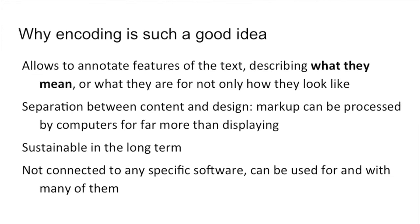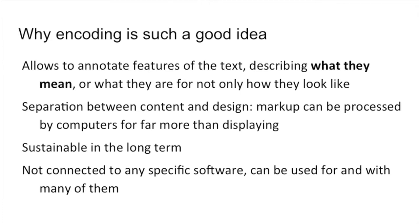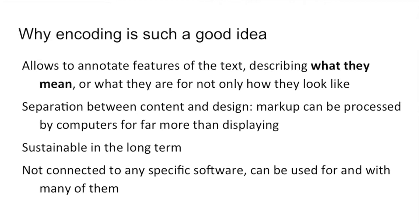Because encoding allows you to describe the text for what it is and not for what it looks like, which is a smart thing to do if you want to process features on the text and not the way they look. It also allows you to separate the text and the content of your edition from the way it looks on the display, so that you can process it in many ways. It's very good for long-term sustainability because it is a way of recording what you mean to do. And it is not connected to specific software — the kind of encoding we will show you is something that can be used over and over again.